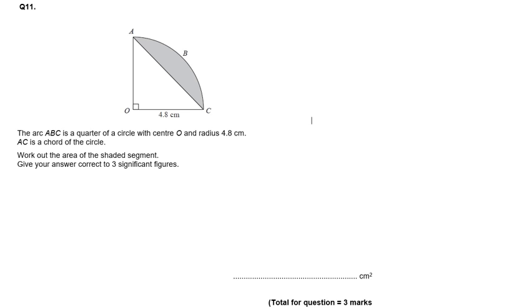Okay, so for this question we are given this diagram here and some information about the diagram, and we're trying to work out the area of this shaded area. So I'm going to do this in two ways. First of all, I'm going to find the area of the quarter circle or the sector. Second of all, I'm going to find the area of the triangle.